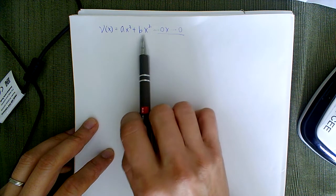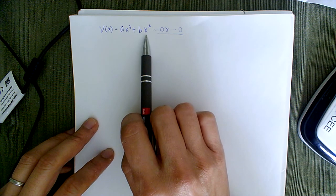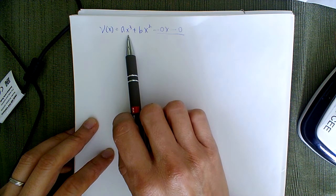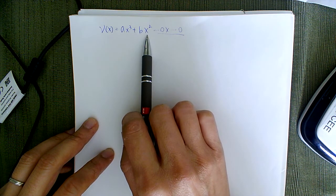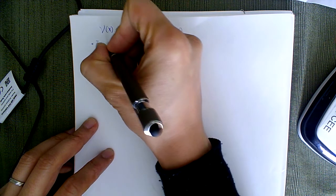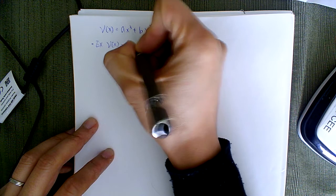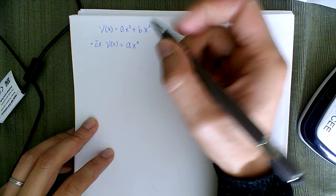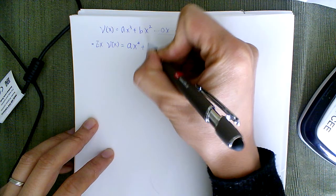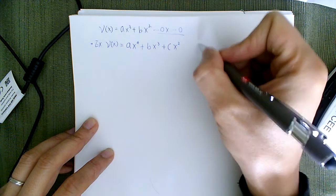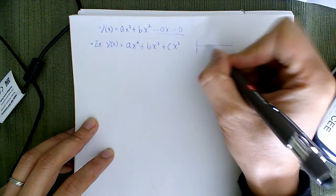Some students might say we cheated by knowing there's a third order term from the back of the book in mechanics of materials. So the question is: what if you don't know that? Would the principle of virtual work still work? Today we're going to try it with a fourth order assumption — just in case, going with a·x⁴ plus lower terms.